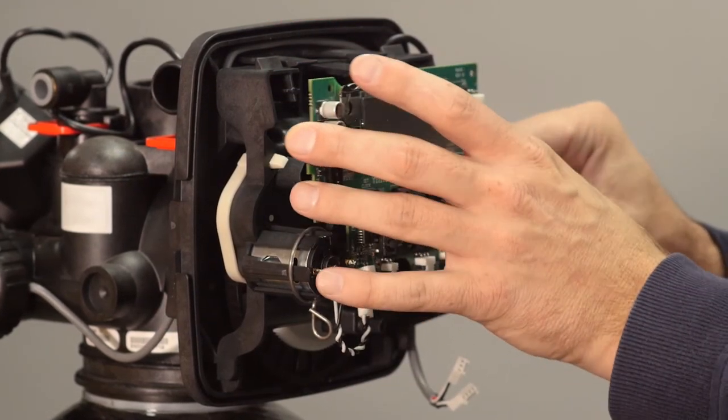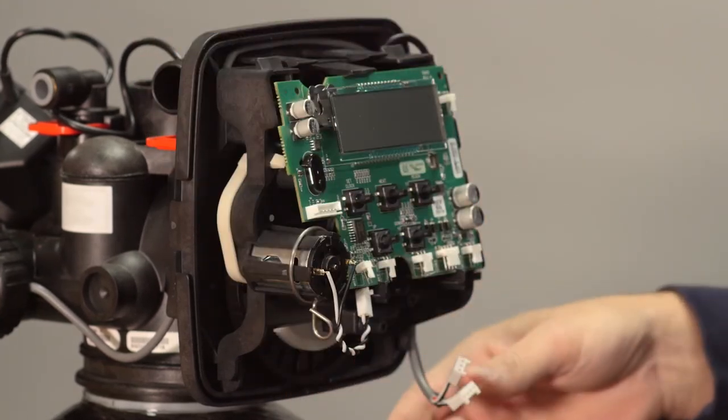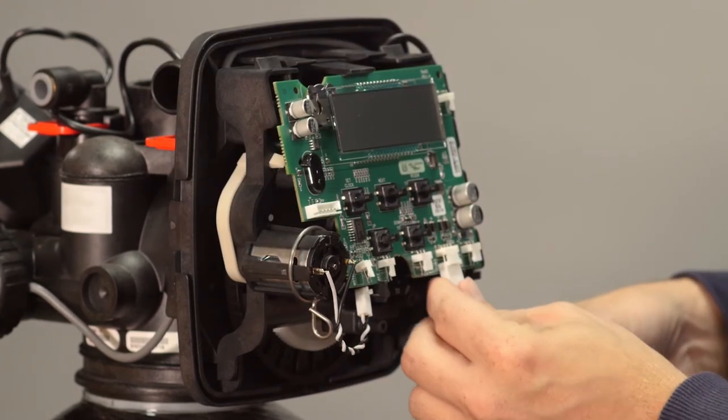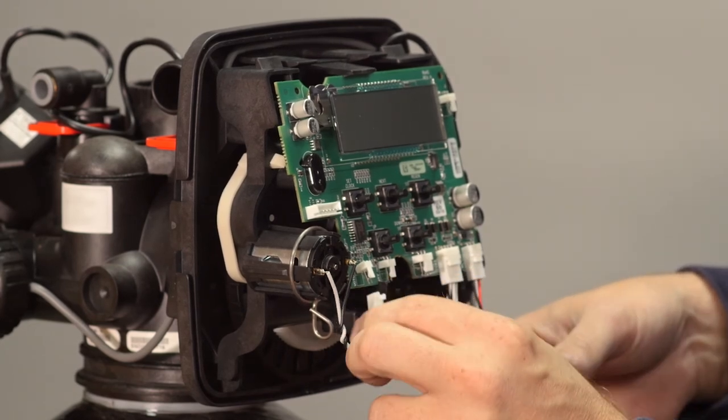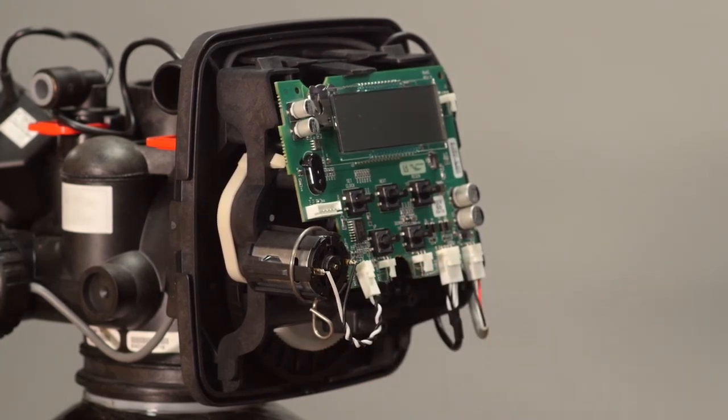Set the board into its two lower retaining posts and tilt into place. Make sure the upper locking tab snaps into place. Plug the wires into the board and replace the front cover.